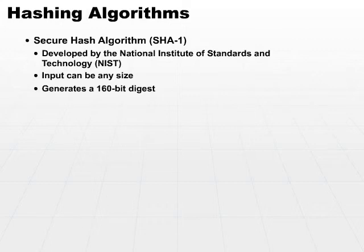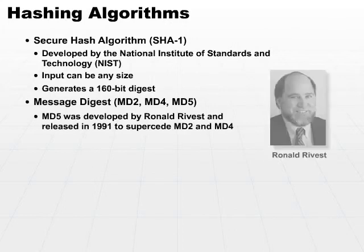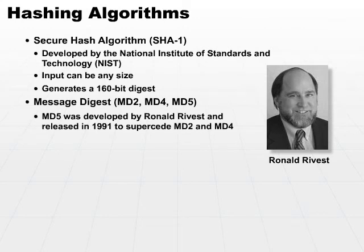SHA is not the only hashing algorithm. There's also the Message Digest algorithm. Popular versions were MD2, MD4, and currently MD5 is the version you'll see in use today. MD5 was developed by Ronald Rivest and released in 1991, superseding MD4, which superseded MD2.